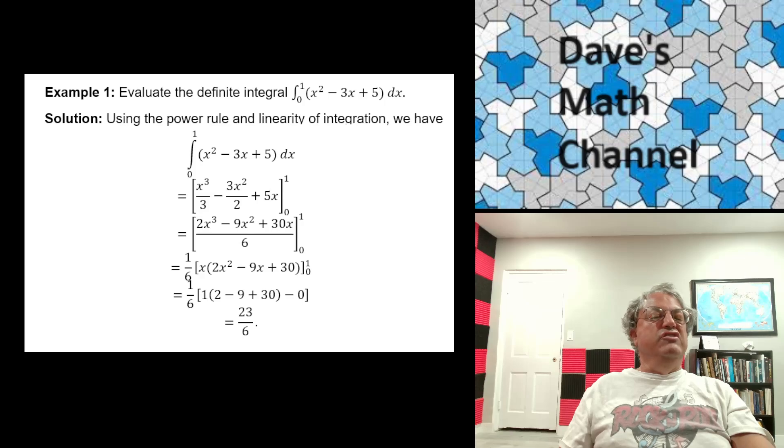And we're evaluating that polynomial between x equals 0 and x equals 1. And I like to write everything over a common denominator. It just makes life a lot easier. In this case, the common denominator is 6. And the numerator becomes 2x cubed minus 9x squared plus 30x. And we can simplify this further by factoring 1 sixth out of the whole expression and factoring x from the numerator. So now the numerator becomes x times 2x squared minus 9x plus 30.